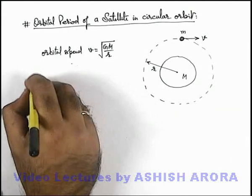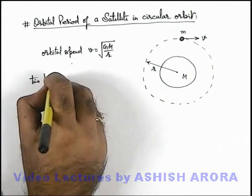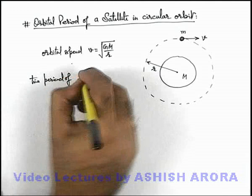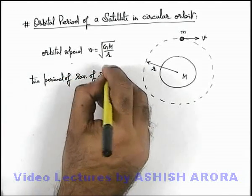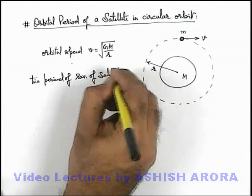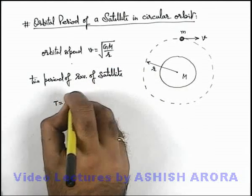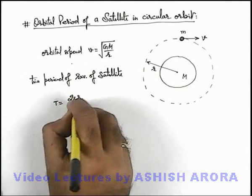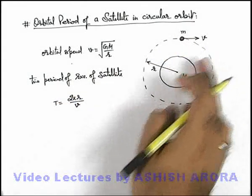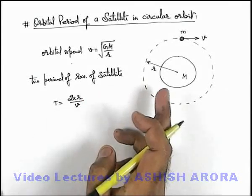So here if we calculate the time period of a revolution of satellite, the time period we can simply write as 2 pi r by v, as the orbit length is 2 pi r and it is revolving at a speed v.